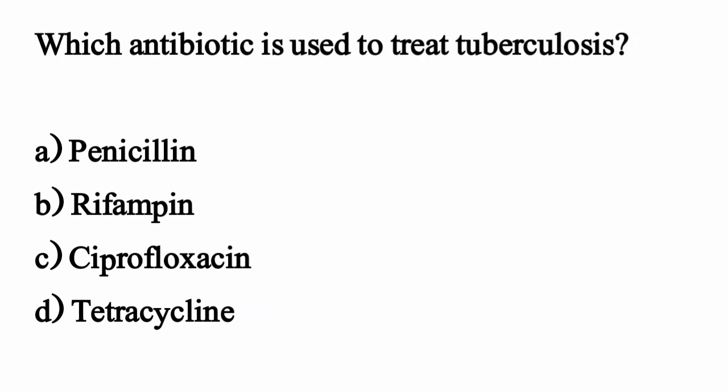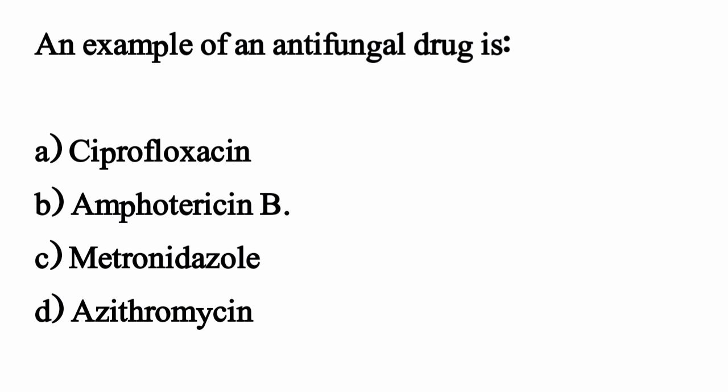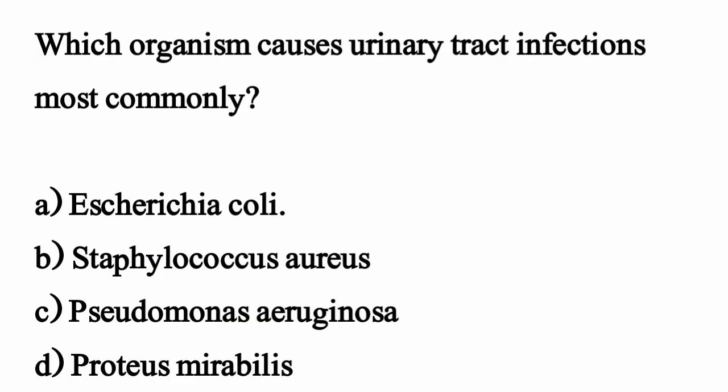Which antibiotic is used to treat tuberculosis? The correct option is option B: rifampicin. An example of an antifungal drug — the correct option is option B. Which organism causes urinary tract infections most commonly? The correct option is option A: Escherichia coli.